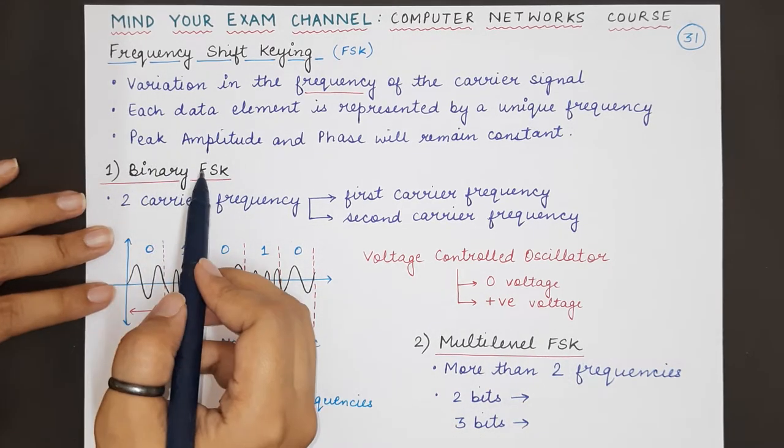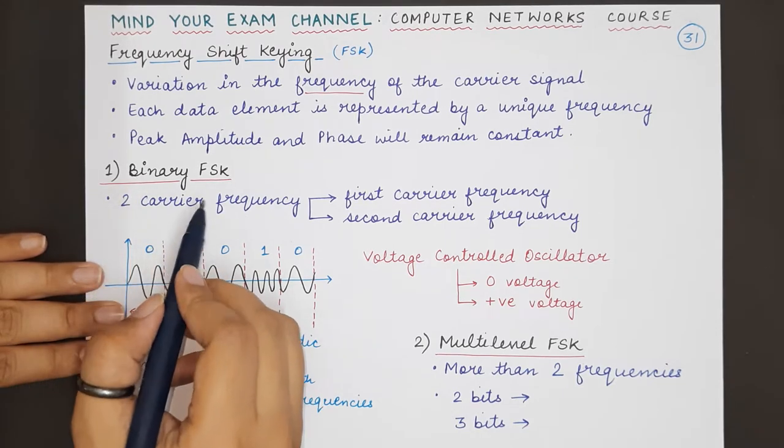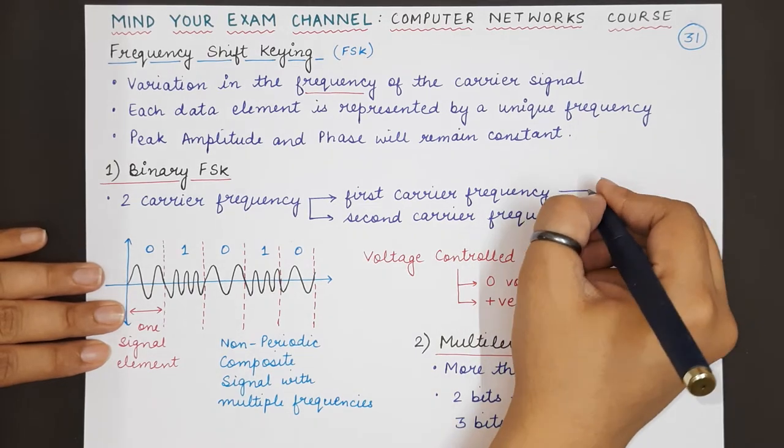Starting with binary FSK, as the name suggests, there will be two carrier frequencies.